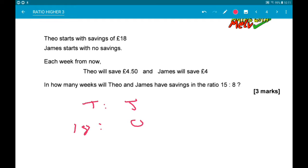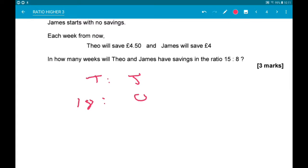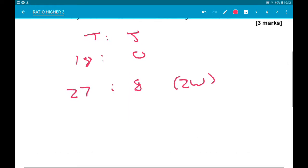Now, we know each week Theo's gonna save 4 pound 50, James is gonna save 4 pounds. So we could just keep adding 4 pound 50 on the left and 4 pound on the right. However, we could be a little bit clever. We know that James's savings are gonna need to be a multiple of 8 because his part of the ratio is 8. So instead of adding every week, we're gonna add every 2 weeks because he saves 8 pound every 2 weeks. So every 2 weeks, Theo is gonna save 9 pound, James is gonna save 8 pound. So after the first 2 weeks, they're gonna be 27 to 8. So that doesn't simplify. Another 2 weeks, they're gonna be 36 to 16.